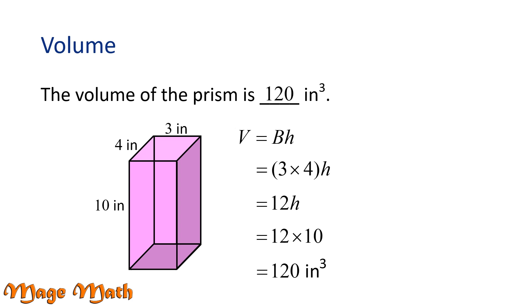Ultimately, we can write the volume formula as length times width times height. Because length times width is the area of the base shape. And we multiplied by the height of the prism. Let's try another problem.